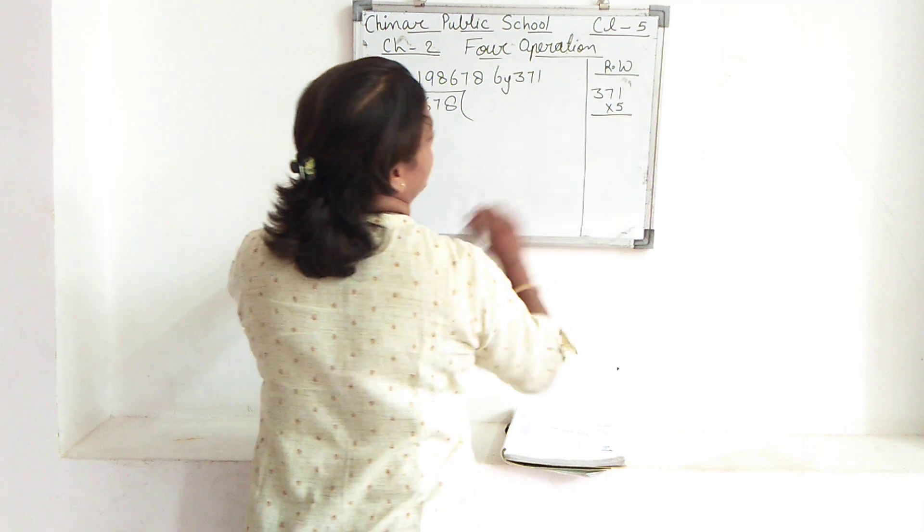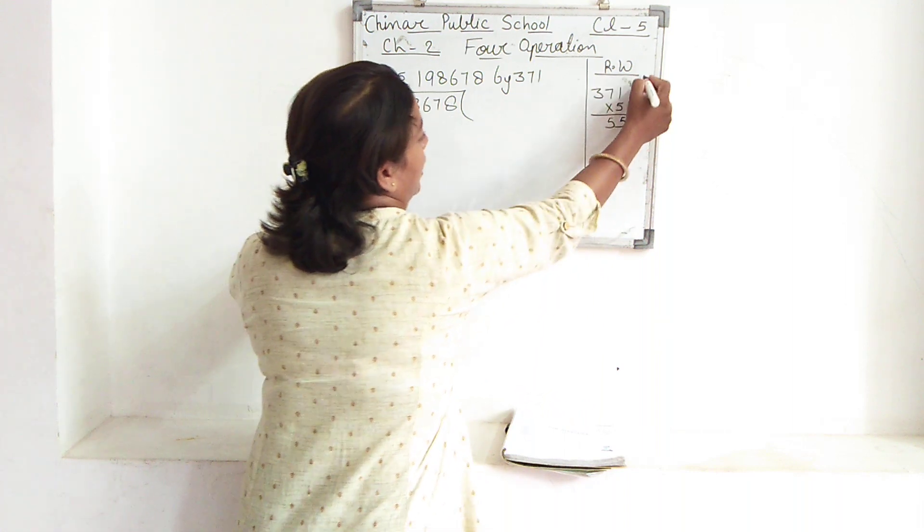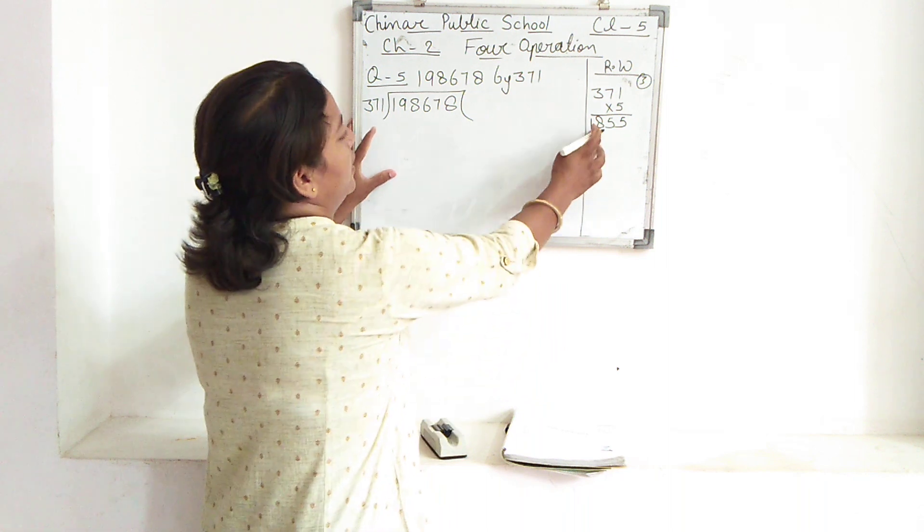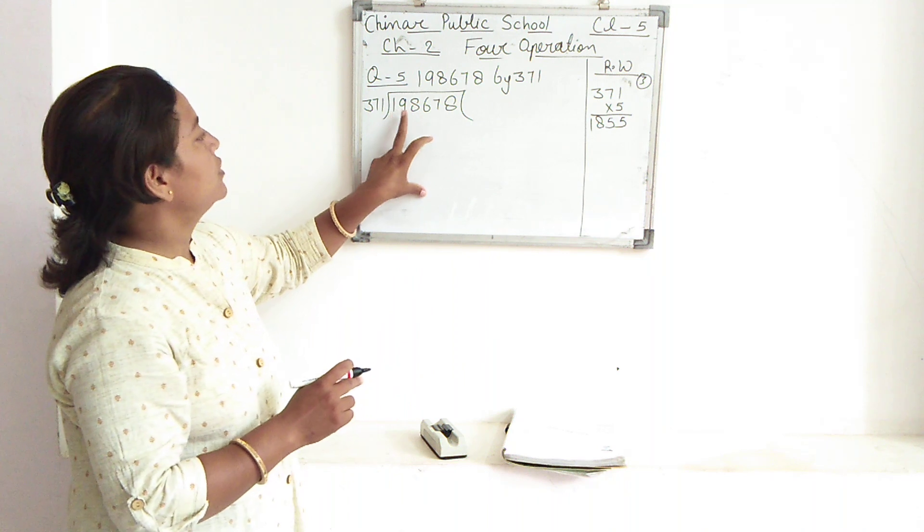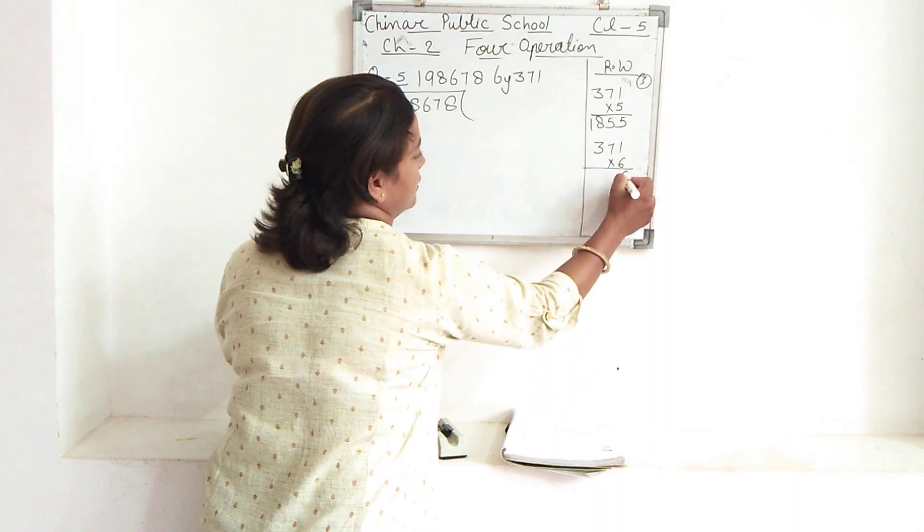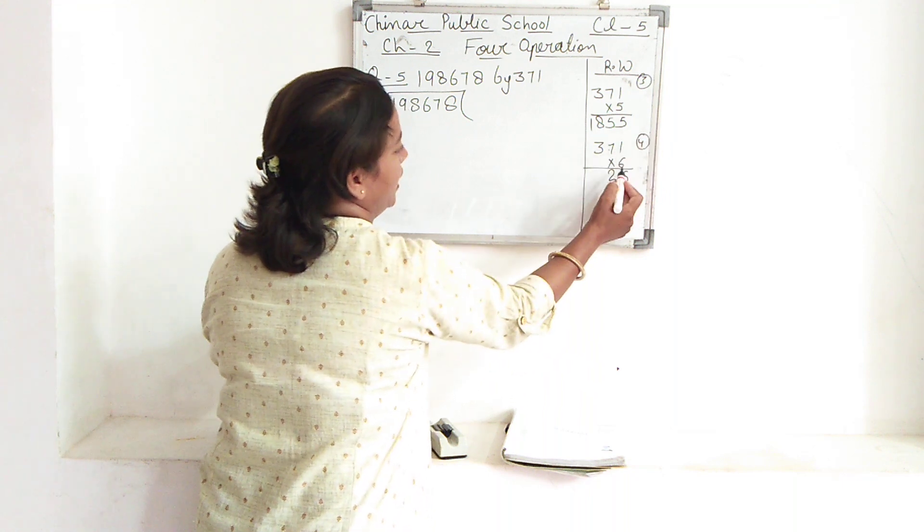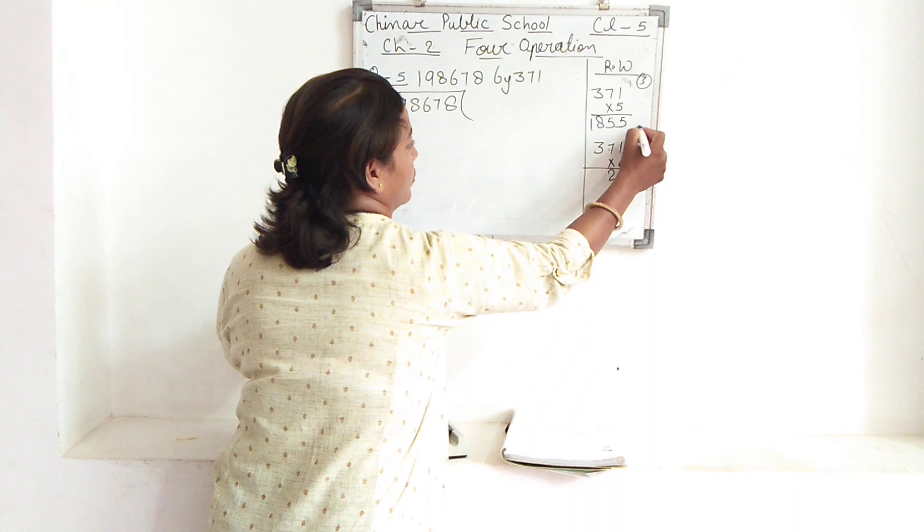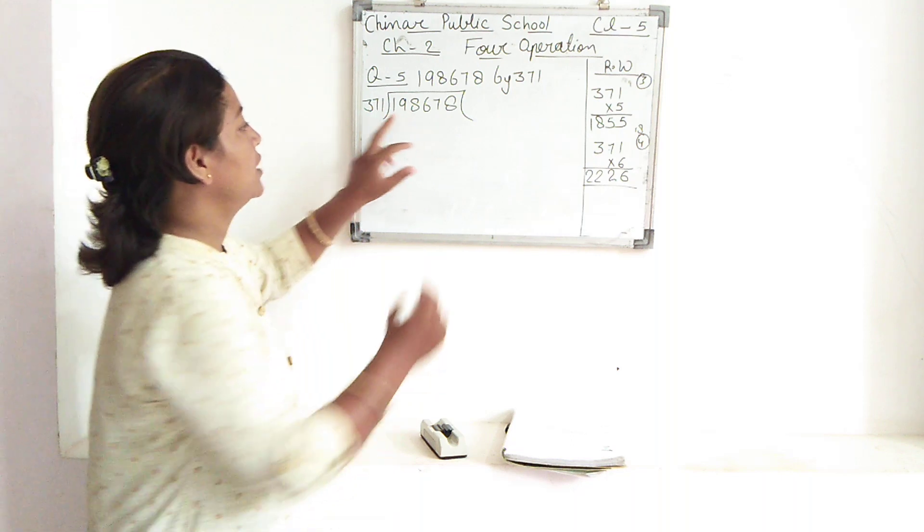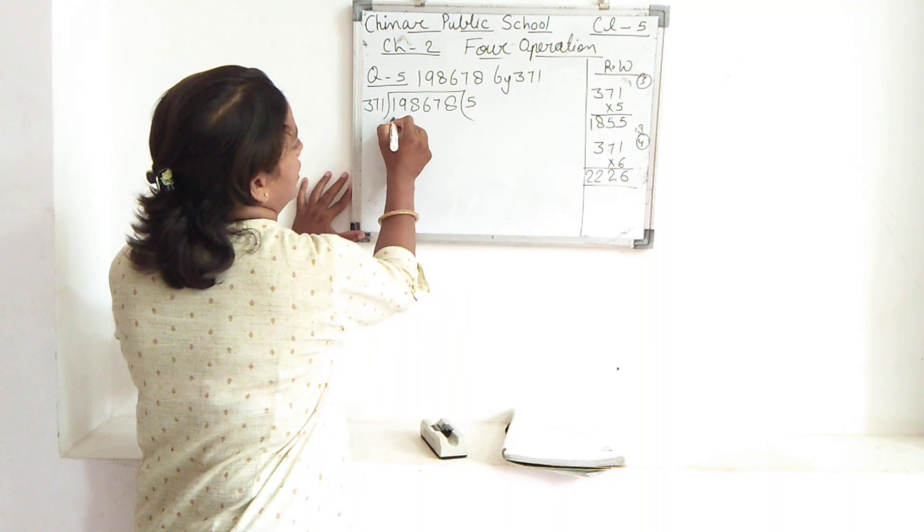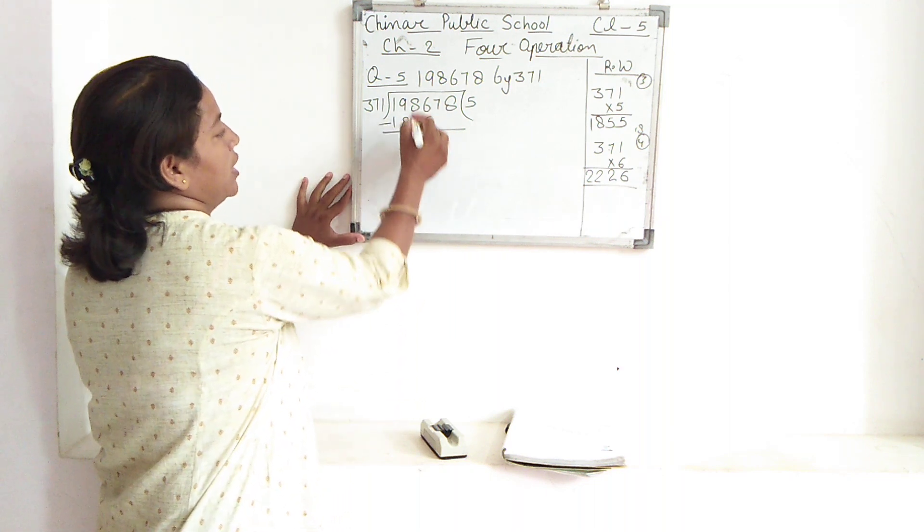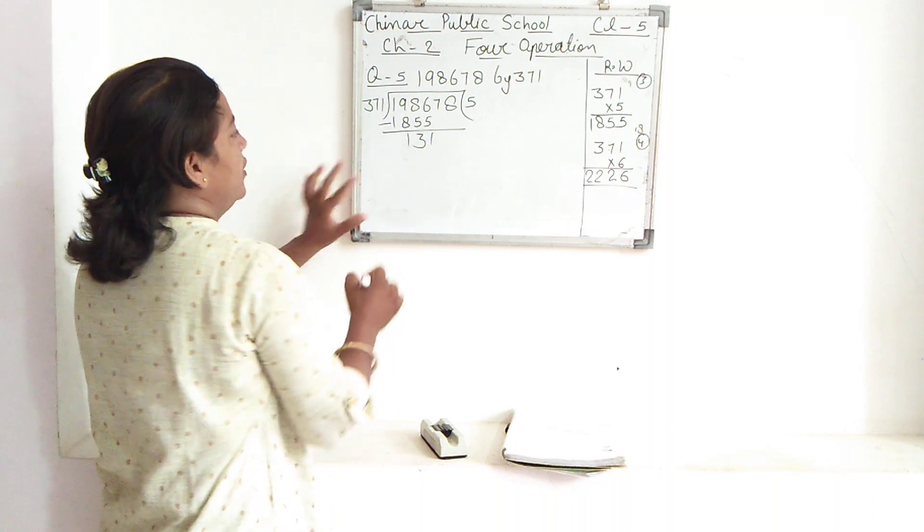Now divide 19 divided by 3. 3 times 6 is 18. Yes, 19 is not coming. So the answer will be 5 or 6? So let's check. First of all, 371 multiplied by 5: 5 times 1 is 5, 5 times 7 is 35, 5 times 3 is 15 plus 3 is 18, giving 1,855. This is 1,986. Yes, we can take 5. Line draw and do the subtraction: 6 minus 5 is 1, 8 minus 5 is 3, 9 minus 8 is 1, giving 131.